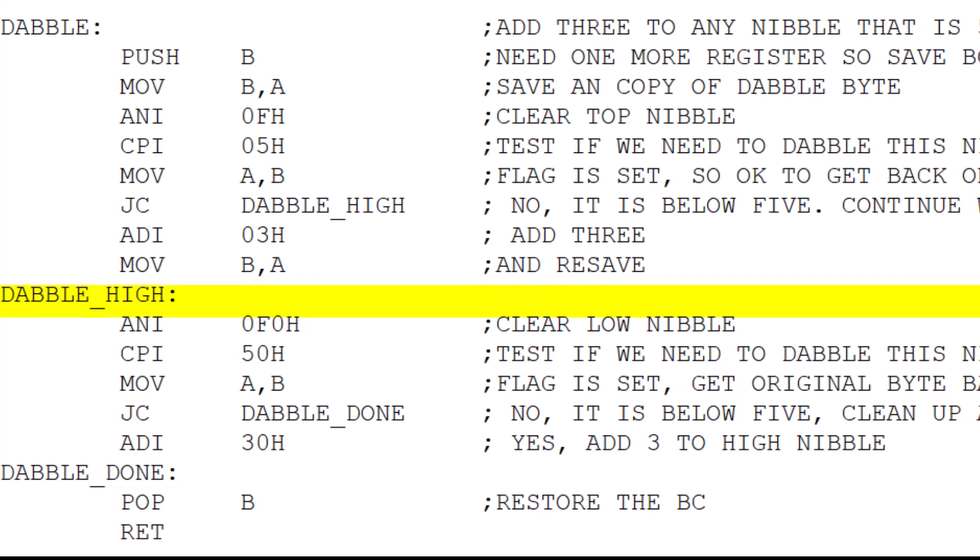Now we need to go on to the high nibble. We're going to clear the low nibble and then compare the value to 50 hex. So we're looking to see if the high nibble is above five. We're going to get our current value of the nibble back and now we're going to test our comparison. If this nibble needs to be adjusted, this will fall through. It'll add three to that nibble or 30 to the whole accumulator. And if it didn't need to be adjusted, then it's already down here at the dabble done step. We just pop the BC pair and we can return. So that's all there is to the dabble, but we have to do that on every one of the nibbles.